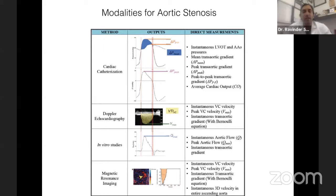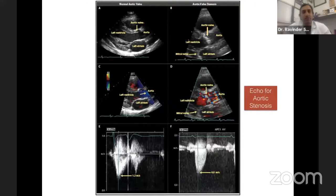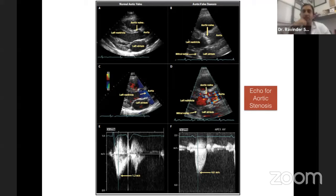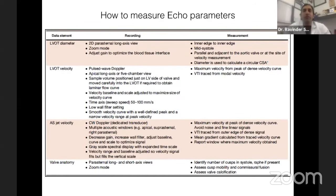MRI is coming up for aortic stenosis assessment, but I want to stress that in clinical practice, when you have an echo report, you should insist that the echocardiographer sends you the echo image along with the report. By looking at the picture you can confirm whether the study is correctly done and whether there is severe or low gradient. The velocity in a normal patient is 1.2 meters per second, but in aortic stenosis, velocity more than 4 meters per second is called severe aortic stenosis.